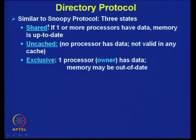This directory-based protocol is very similar to the snoopy protocol. Just as we have seen three states used to explain how reading, writing, and other accesses take place, in this case the three states are shared, uncached, and exclusive. A cache block is in the shared state when one or more processors have the data and memory is up to date — meaning the same copy is present in both main memory and the cache of more than one processor, and all copies are identical.